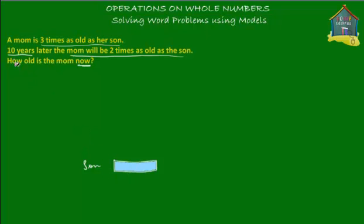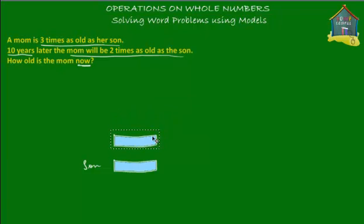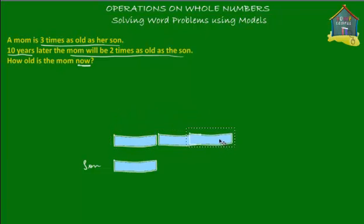If this is the age of the son, represented by one blue block, then how many blocks do we need for the age of the mom? Since she's three times as old as the son, we need three blocks. So let's copy this block and paste it three times — one, two, and three. This is the age of the mom as of now.